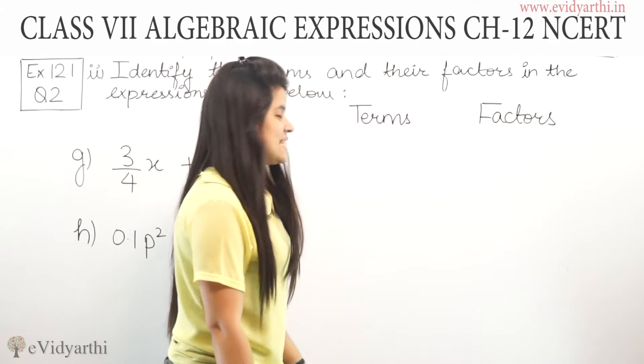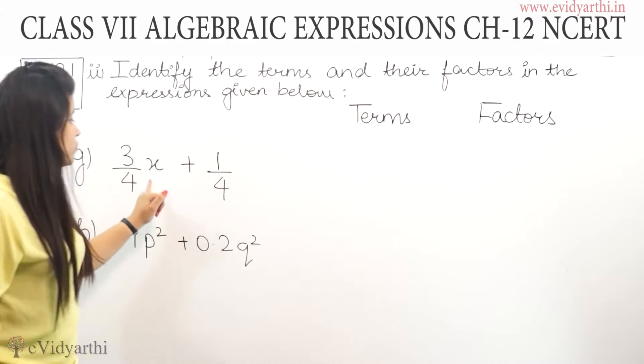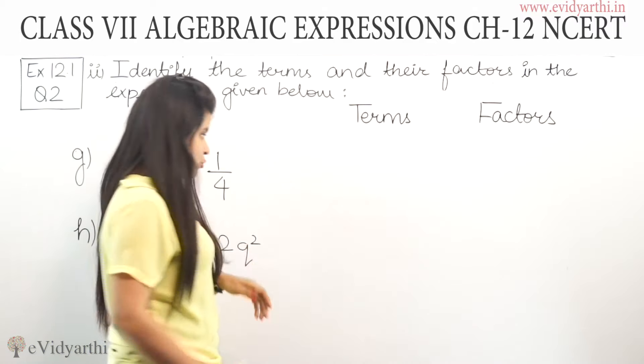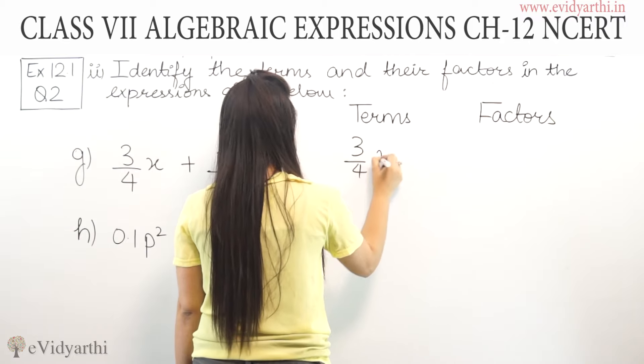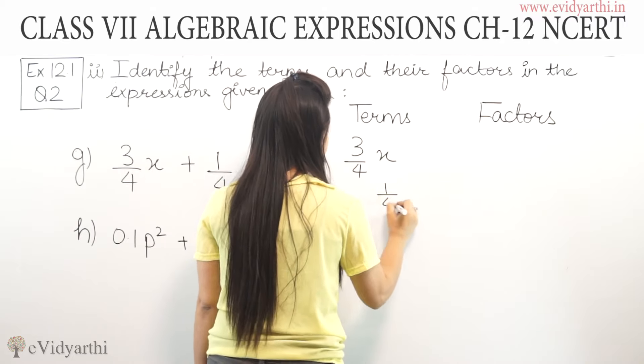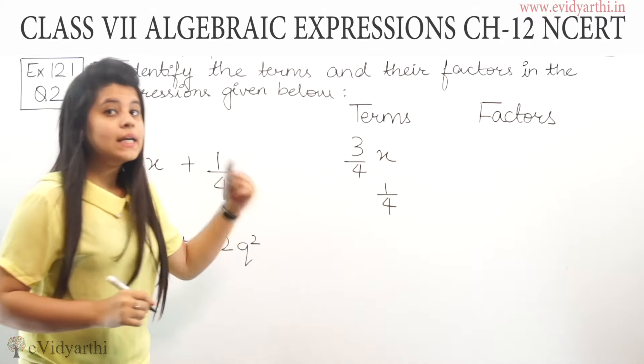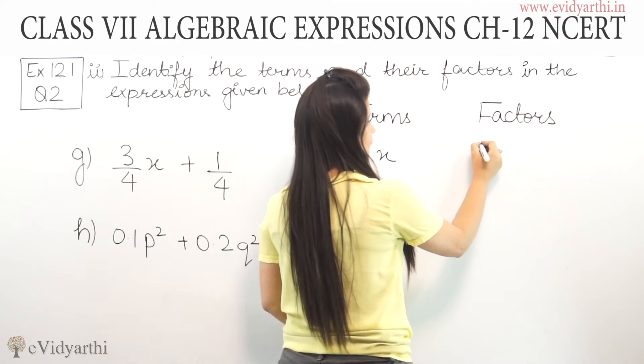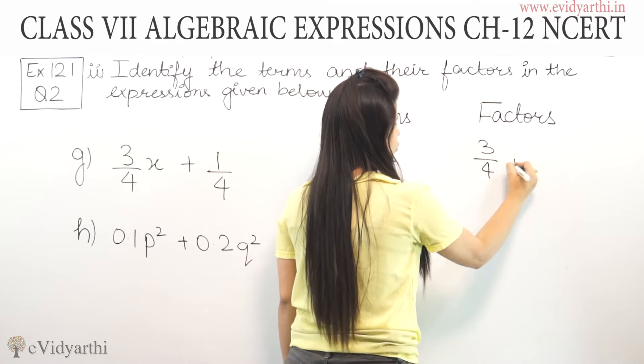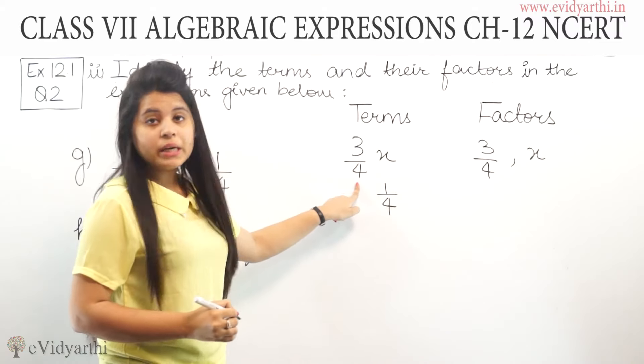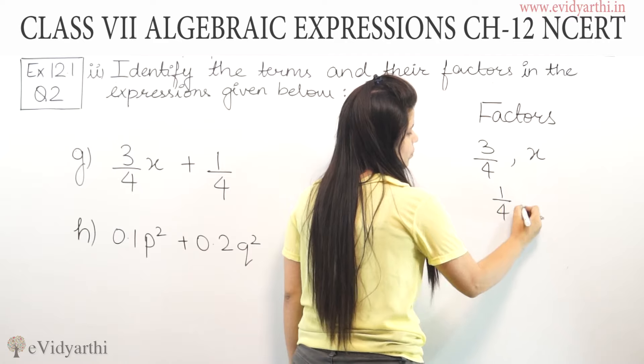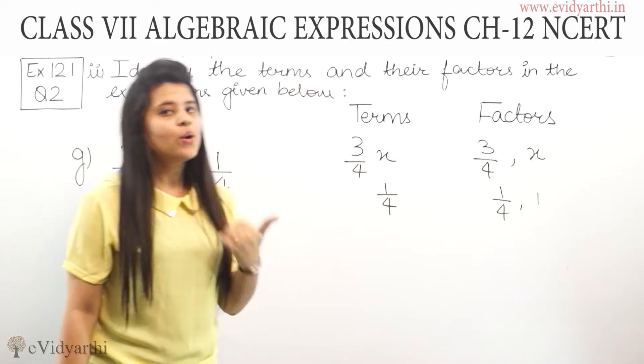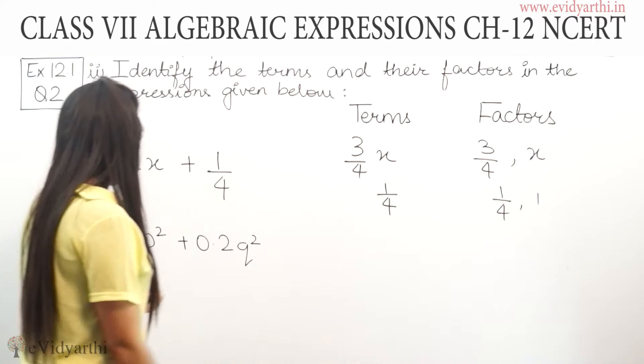Coming to part g, we have (3/4)x + 1/4. The terms are (3/4)x and 1/4, so there are two terms. For the factors, the first term has 3/4 and x. For 1/4, it remains 1/4, or you can write 1 along with it if you want.